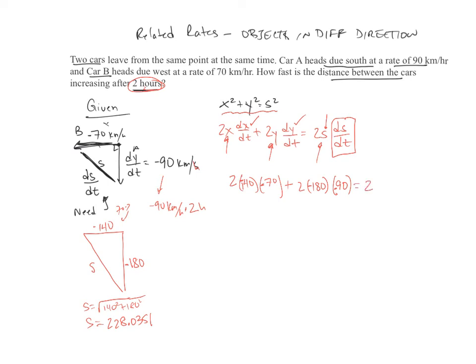Over here, 2 times S. Now S is going to be positive because this distance increasing between the two is a positive distance. 228.0351 DS/DT. Now let's go ahead and solve for DS/DT. Over here we end up with 19,600 plus 32,400 equals, now I'm going to put these in my calculator real fast. That's how I know this, 456.0702 DS/DT.